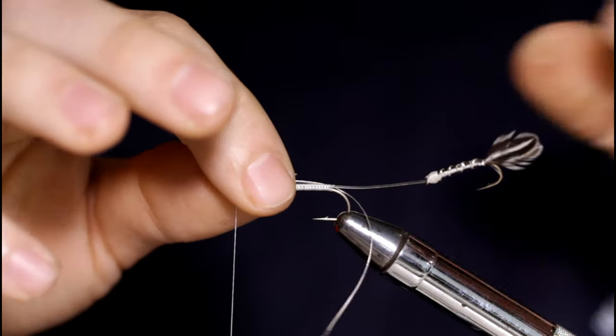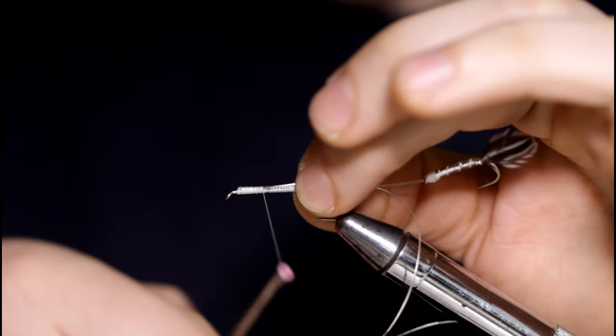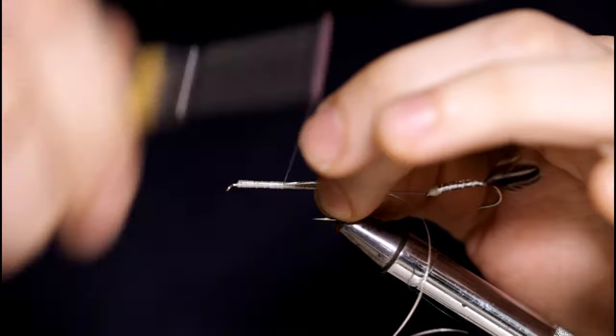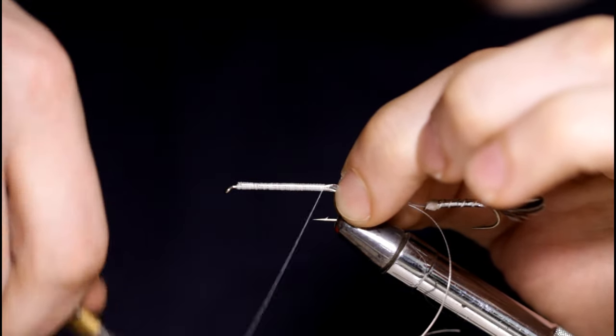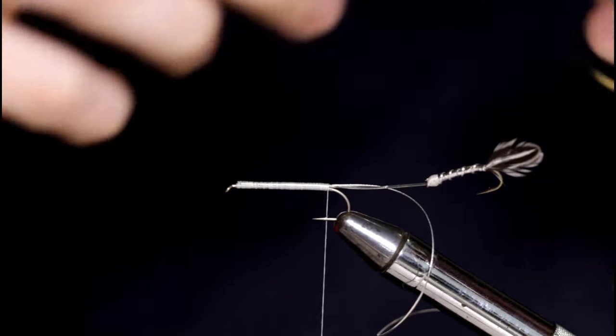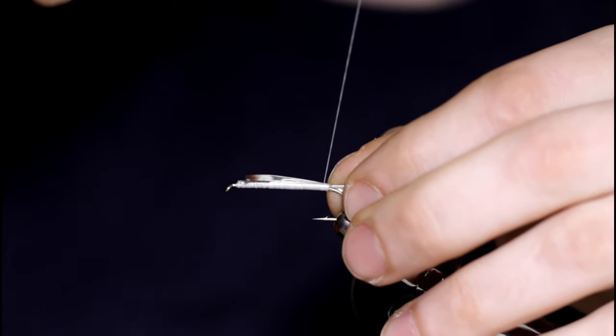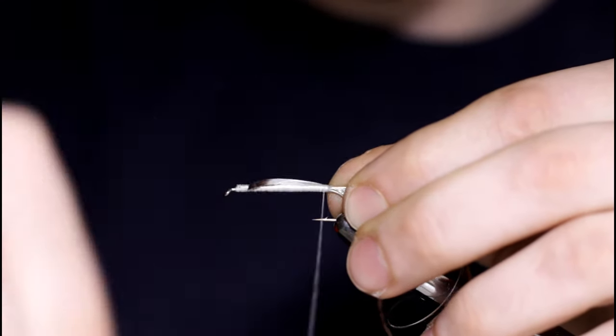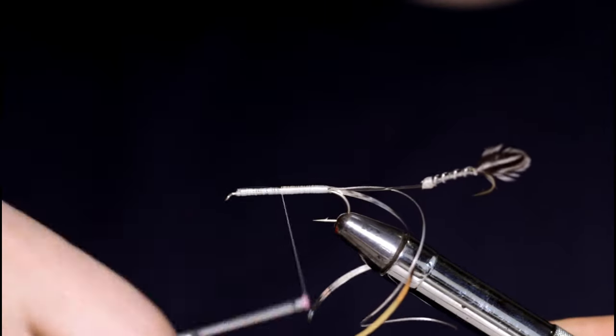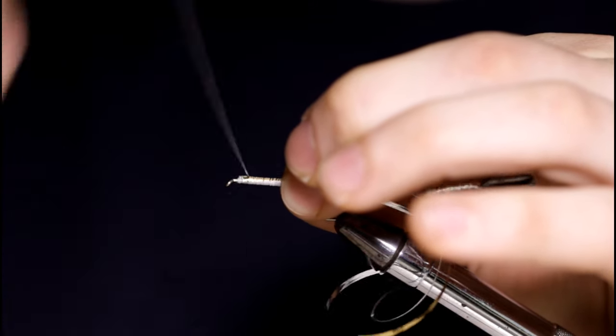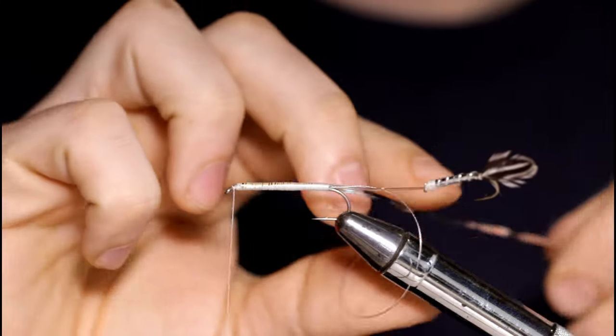Once you get down here to the head start with the oval silver tinsel and wrap down. Once you get down here to the barb of the hook tie in the flat silver tinsel and wind that up. Start winding forward.